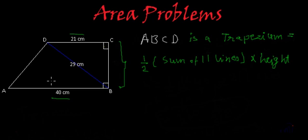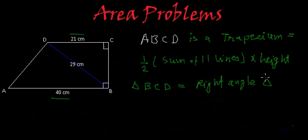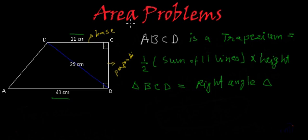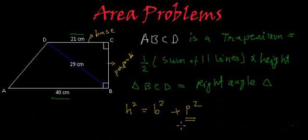First, we will find the length of BC. Looking at triangle BCD, it is a right-angled triangle where one side is the base, BC is the perpendicular, and the slant side is the hypotenuse. By the Pythagoras theorem, hypotenuse² = base² + perpendicular². Rearranging, P² = H² − B².